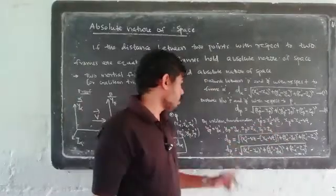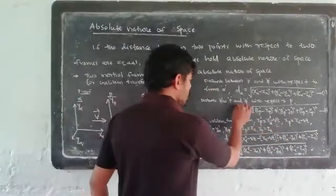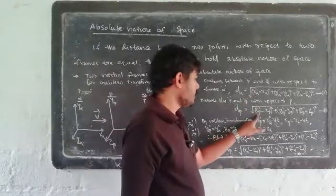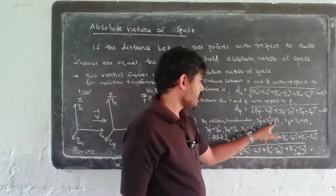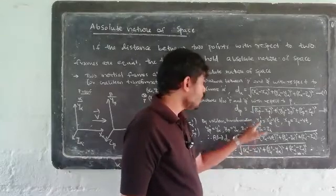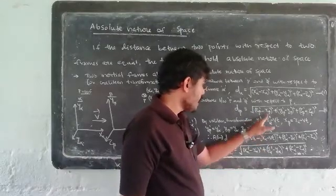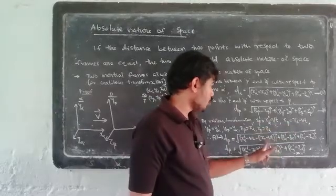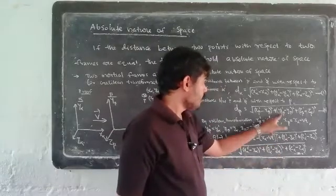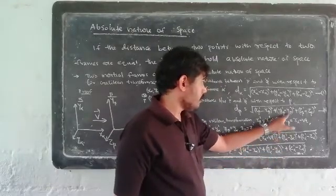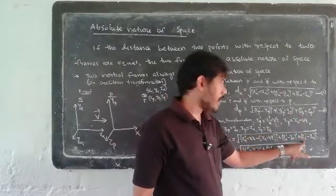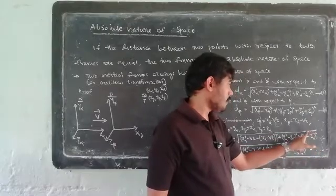Applying the Galilean transformation equations to d-beta: x-beta-dash equals x-alpha-dash minus Vt, and x-beta equals x-alpha minus Vt. So the term (x-beta-dash minus x-beta) becomes (x-alpha-dash minus Vt) minus (x-alpha minus Vt), which simplifies to (x-alpha-dash minus x-alpha). Similarly for the y and z terms: (y-beta-dash minus y-beta) equals (y-alpha-dash minus y-alpha), and (z-beta-dash minus z-beta) equals (z-alpha-dash minus z-alpha).